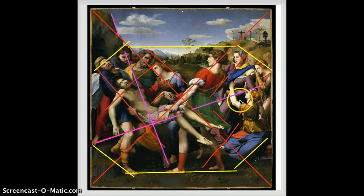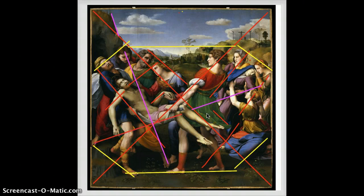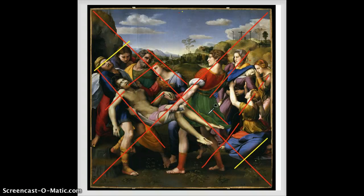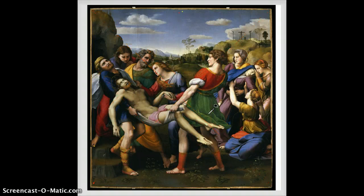In their thrusts, counter-thrusts, and directional energies — no accident. This is organized like a chief architect who's building a temple or a building to stand for the next thousand years, in this 72 by 69 inch painting. And we're going to move on to another genius aspect of structural organization.